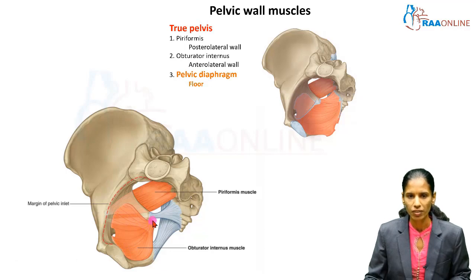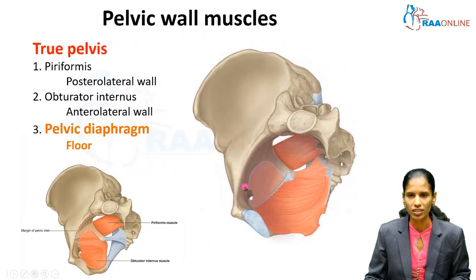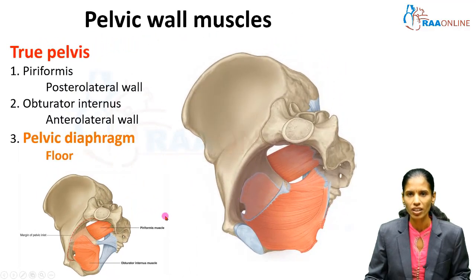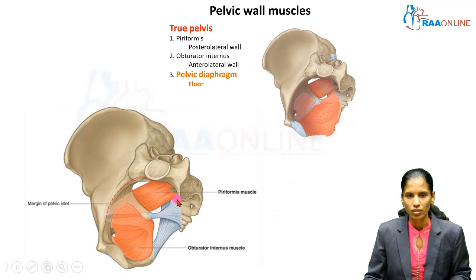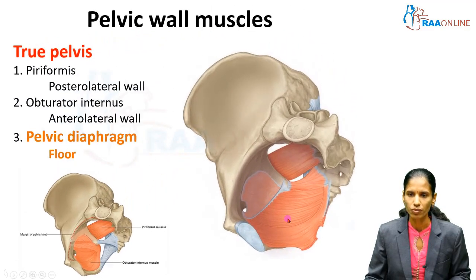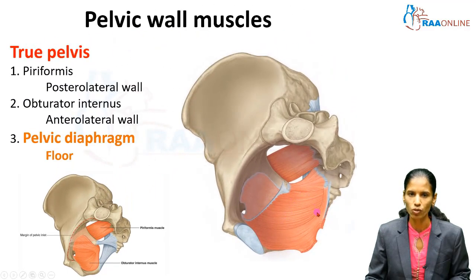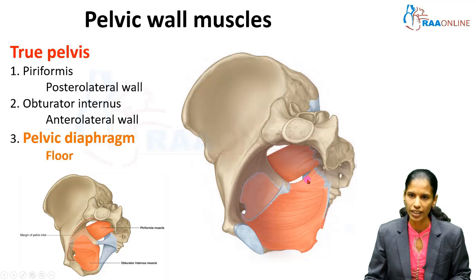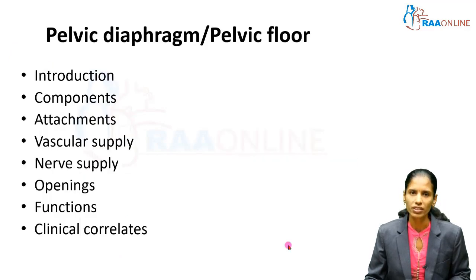After leaving the pelvic cavity, both muscles are inserted into the greater trochanter of the femur. The outer limit of the pelvic cavity is delineated by a muscle known as the pelvic diaphragm. The majority of the floor of the true pelvis is formed by the pelvic diaphragm, which is also called the pelvic floor. In this picture you can see the entire muscle fibers forming the pelvic diaphragm.